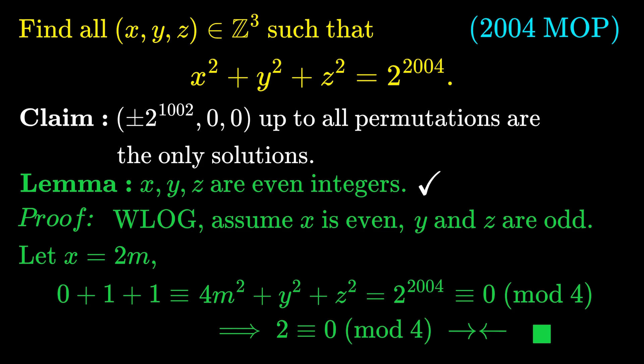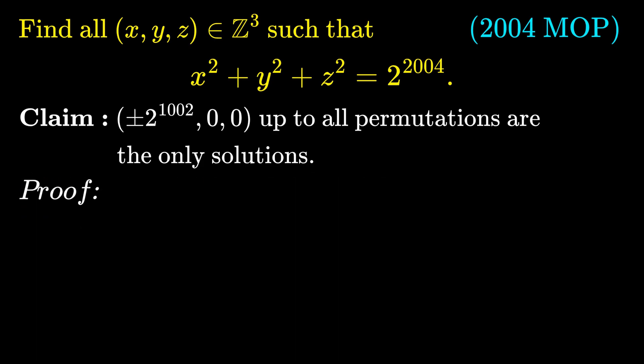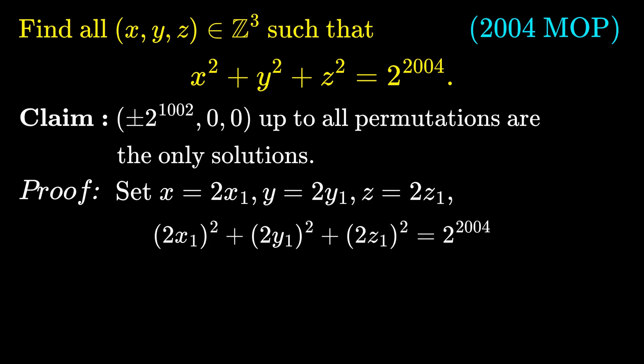We now proceed to prove our main claim. By our lemma, we can set x equal to 2x1, y equal to 2y1, and z equal to 2z1. And we can simplify the equation by dividing both sides by 4, which leaves us with x1 squared plus y1 squared plus z1 squared is equal to 2 power 2002.